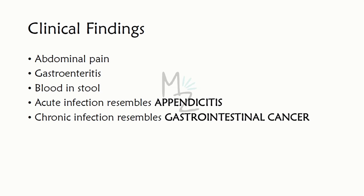Clinical findings: the most common are abdominal pain and occult blood in stool — occult meaning not visible to the naked eye, detectable only under microscope. Other findings include gastroenteritis; an acute infection resembles appendicitis in symptoms, while chronic infection resembles gastrointestinal cancer.